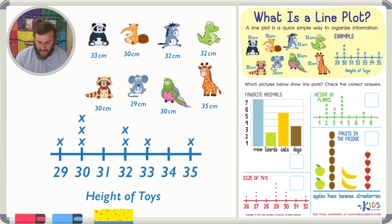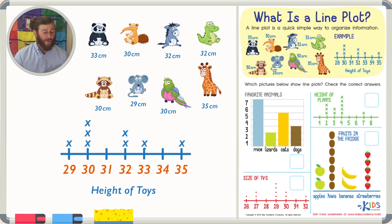So if we look at our line plot, and the line plot is this section of information right here with X's and numbers, we'll see all the heights of the animals listed at the bottom. We'll also see some X's right above. Those X's represent, each X represents one animal.